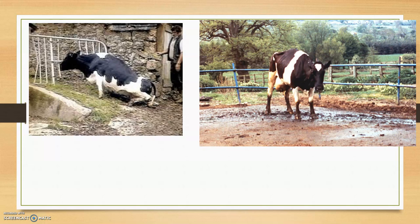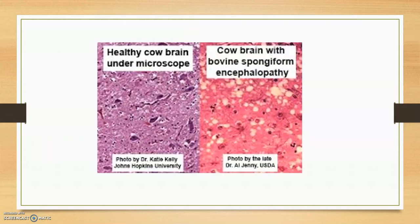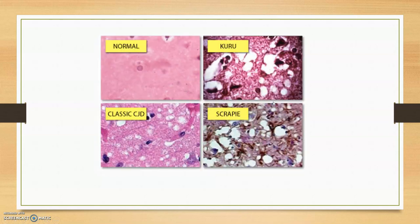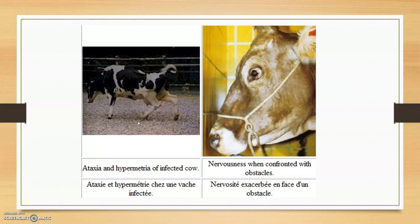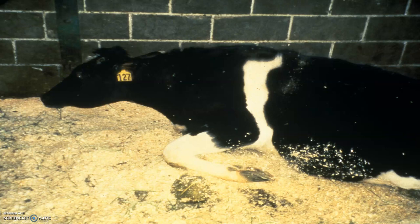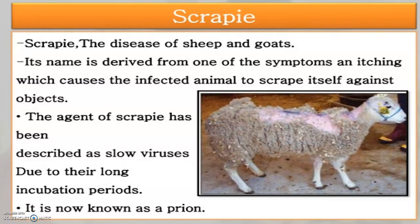Clinical signs include posterior paralysis and anterior paralysis. Under the microscope, a healthy cow brain appears normal, but in BSE-affected brain tissue you can see extensive vacuolation — many vacuoles and gaps. This is compared to normal brain tissue, scrapie, classic CJD, and kuru brain sections. The cow shows paralysis when confronted with obstacles.